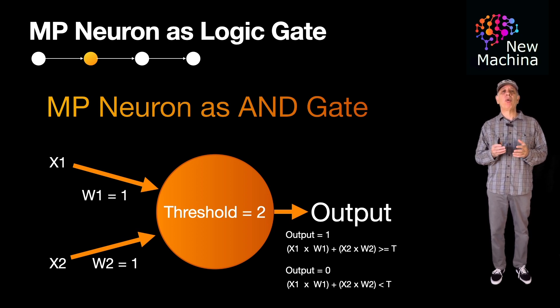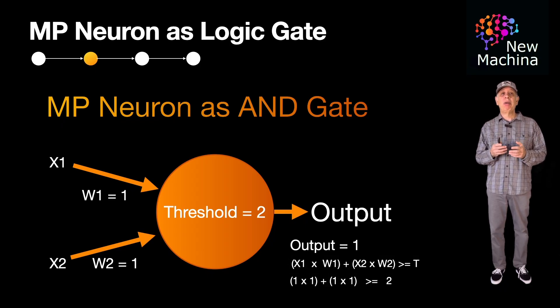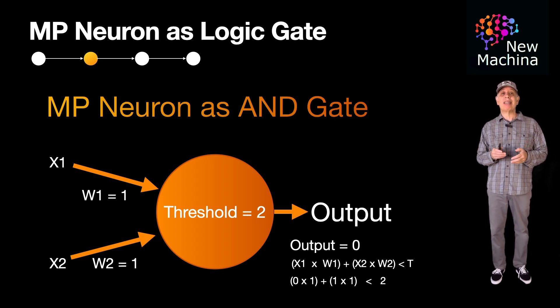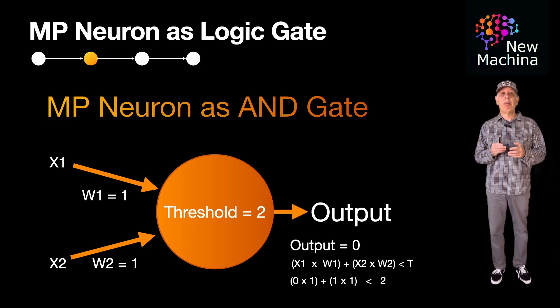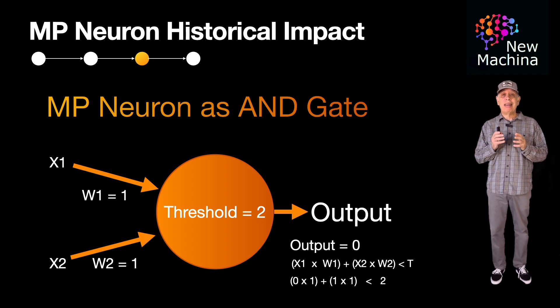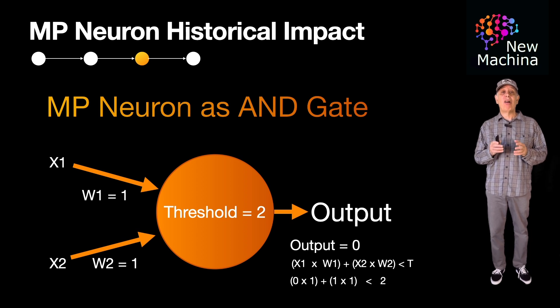If both X1 and X2 are set to 1, then the sum of our weighted inputs does meet our condition of greater than or equal to the threshold value of 2. Therefore, the MP Neuron outputs a 1. If only X1 or X2 is set to 1, or neither is set to 1, our sum of weighted inputs is less than our threshold value of 2, so the MP Neuron output will be 0. Okay, so this looks good. These weights and threshold settings give us our desired AND gate behavior.